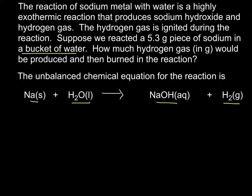We're given the unbalanced chemical equation for the reaction, and our job first is to make sure that it's balanced. We're told that it isn't balanced, so we have to balance it. The first thing I notice is that on the right side of the reaction there are three hydrogens, and over here there are only two. So I'm going to start by putting a coefficient of 2 in front of the water molecules on the left side of the equation.